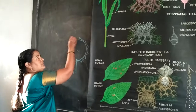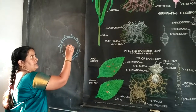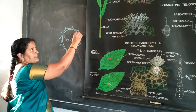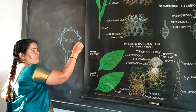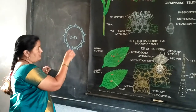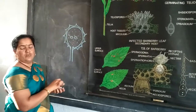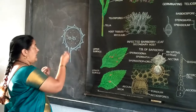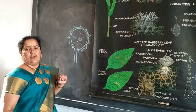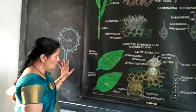The uredospore is composed of a cell wall and inner cellular content. The cell wall is made up of exine and intine. Exine is spiny and ornamented while intine is smooth. Inside this, two haploid nuclei are present along with the cytoplasm. At the equatorial region, it produces four germ pores. This is the structure of the uredospore.